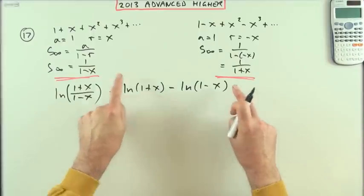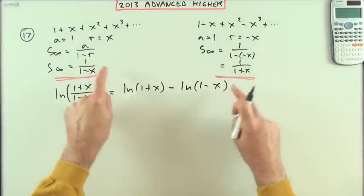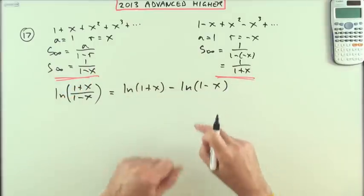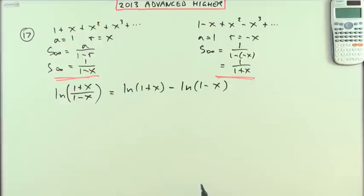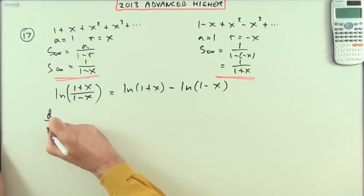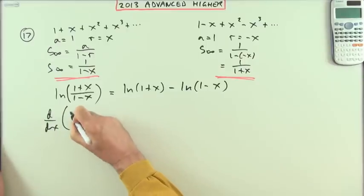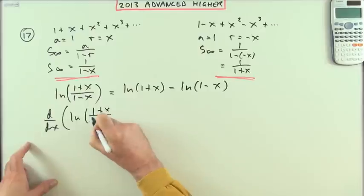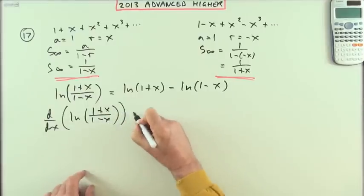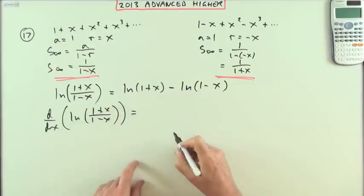If I differentiate ln((1+x)/(1-x)), that would be d/dx of ln((1+x)/(1-x)), which equals the derivative of these two terms.